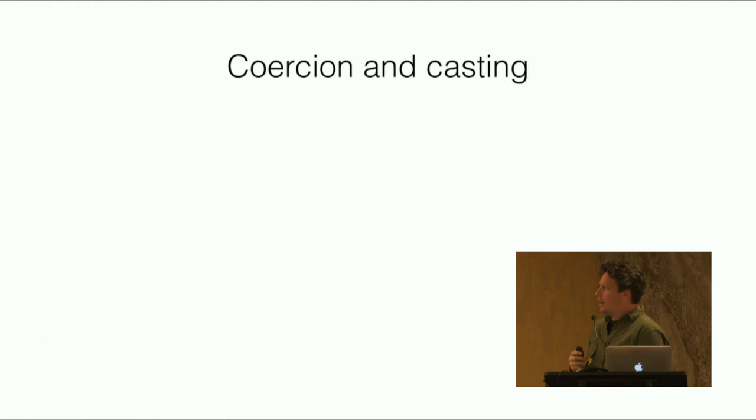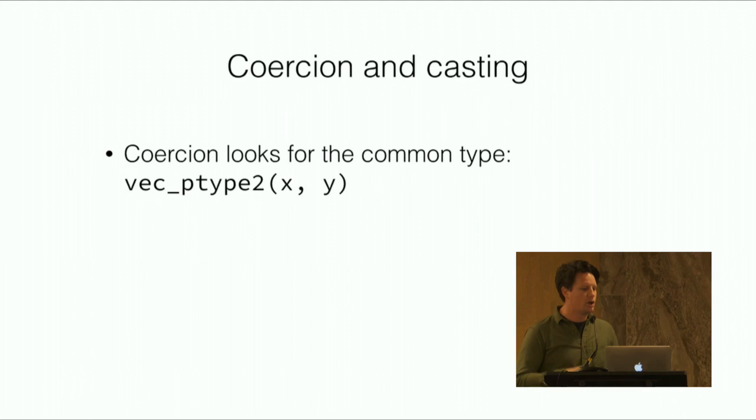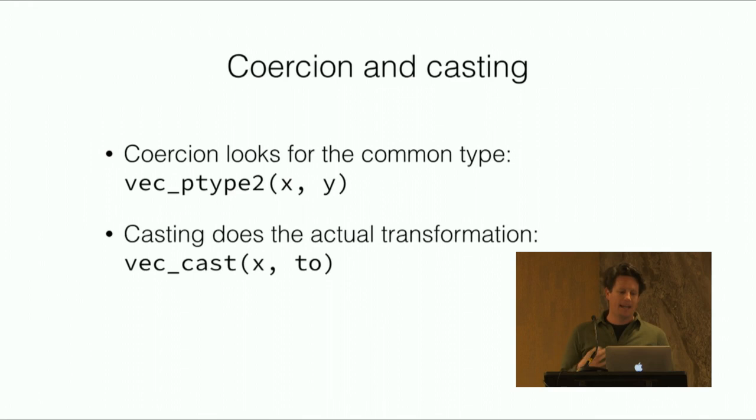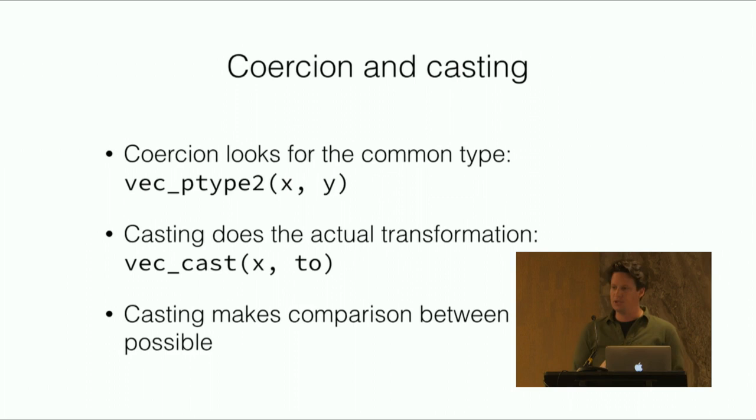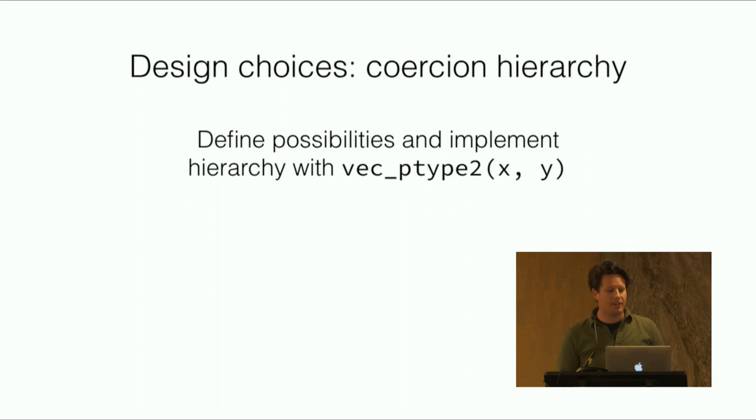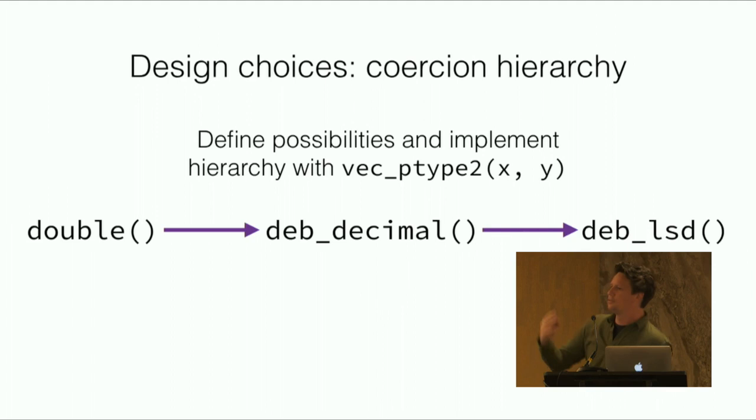What coercion and casting do is they're kind of two sides of the same coin. Coercion looks for and determines what the common type is with this function vec_ptype2, while casting does the actual transformation. Things like comparison between classes are made possible by implementing both of these things. Again I don't have a chance to go through all this, but coercion is really about design choices - there's not necessarily that much code that goes into something like this. In this instance with deb vectors I decided to have a double go to a deb_decimal which would then go to a deb_lsd. So if you had these three types in a combined function then you would get a deb_lsd.